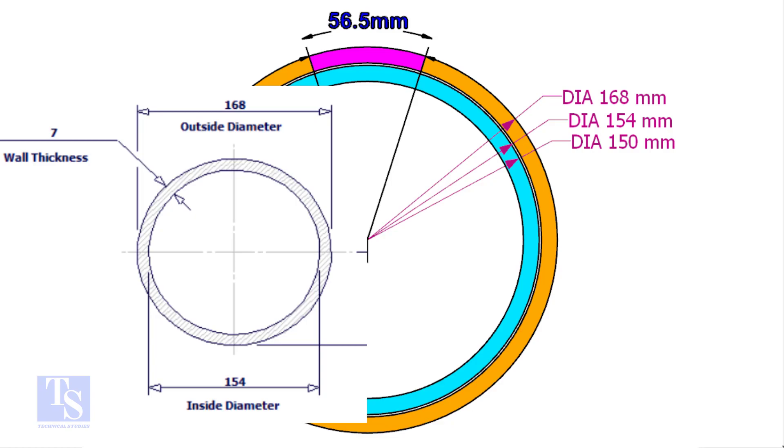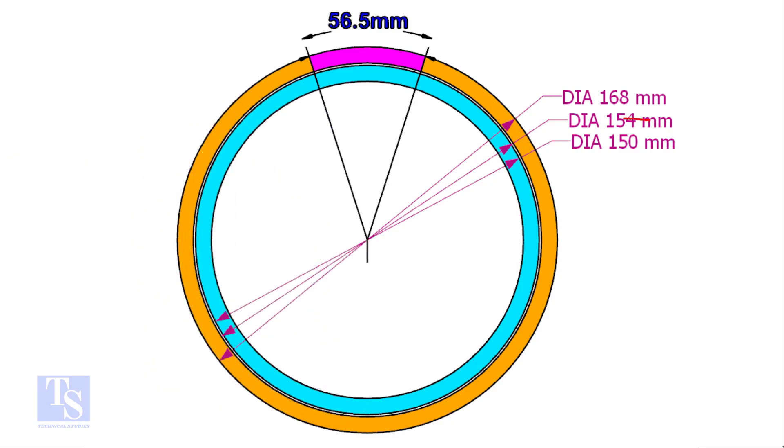The ID of a 6 inch 40 schedule pipe is 154mm. The OD of the clamp shall be 4 to 5mm less than the pipe ID. This clamp OD is 4mm smaller than the ID of the 6 inch pipe.